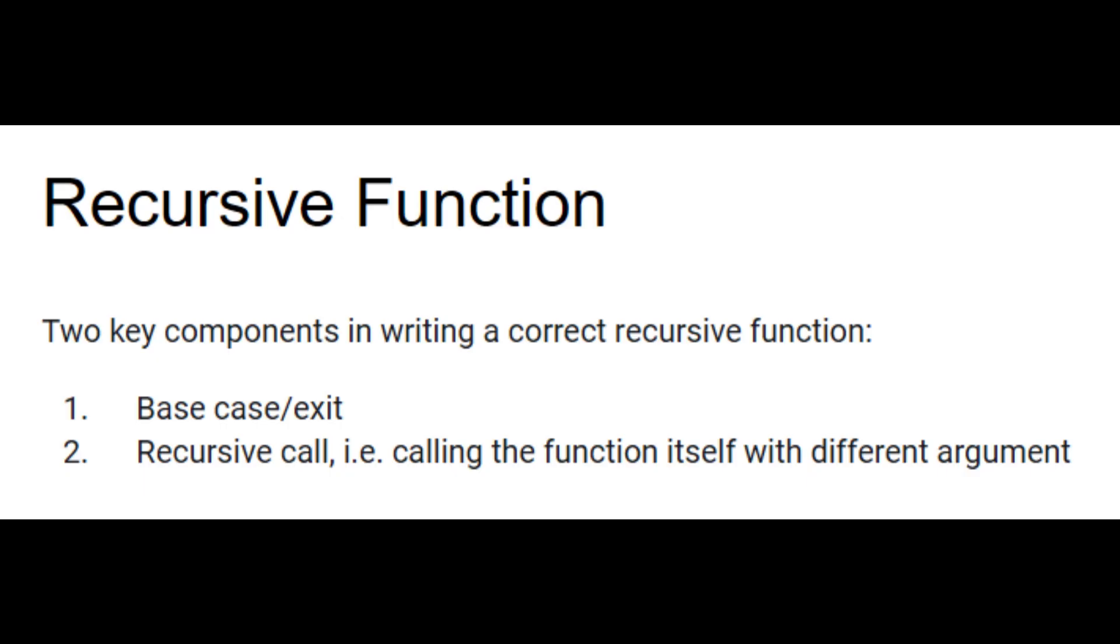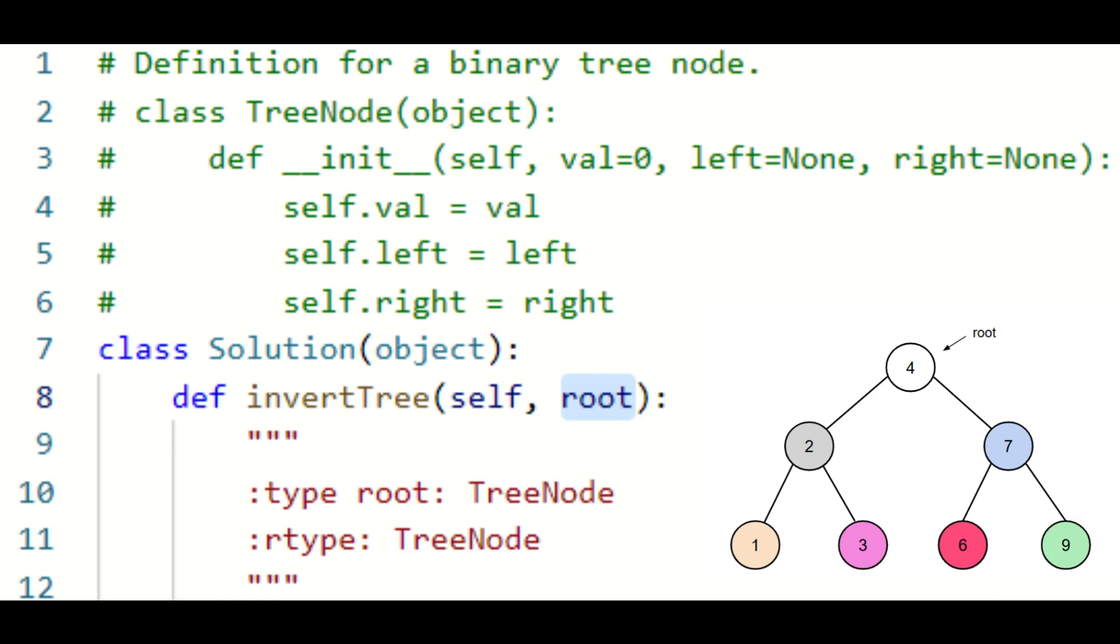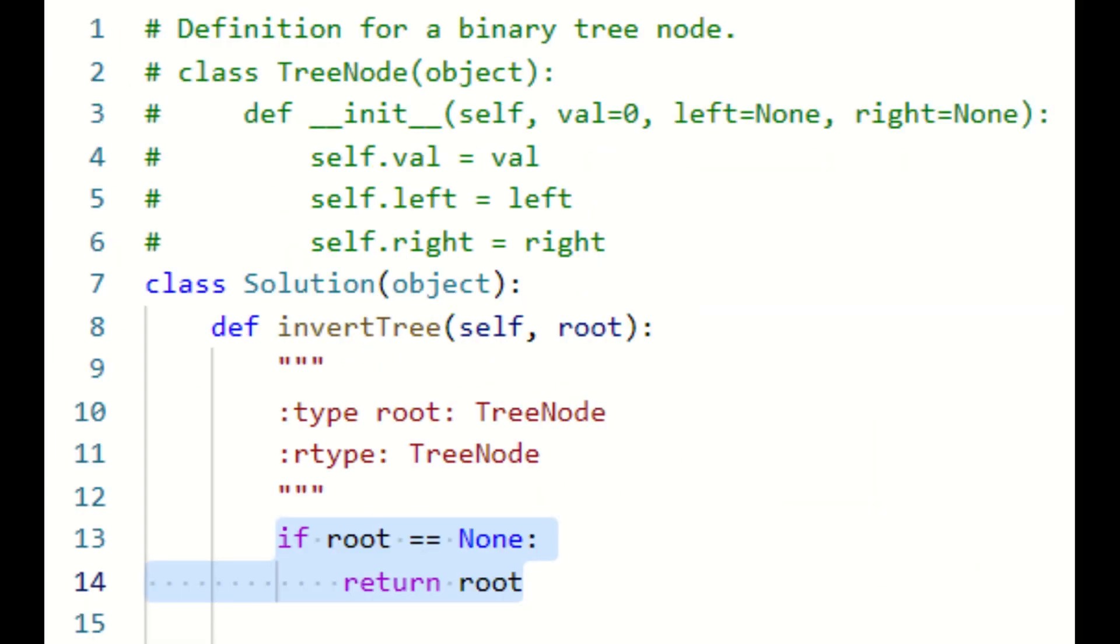So how do we come up with a formal way to solve such a problem? This is where recursion comes in. We can define a recursive function that takes in the root node of the tree. The base case is that if the root node is none, we return none.